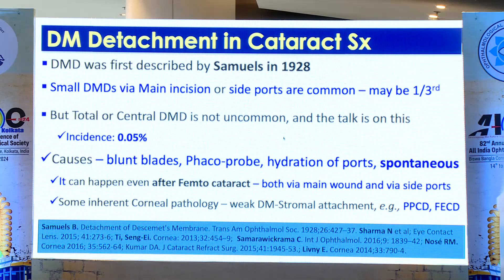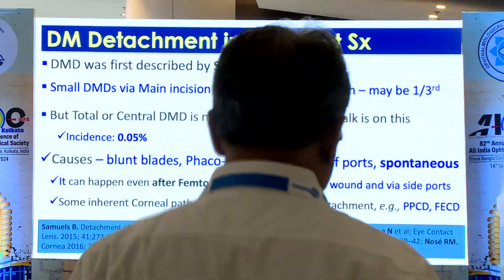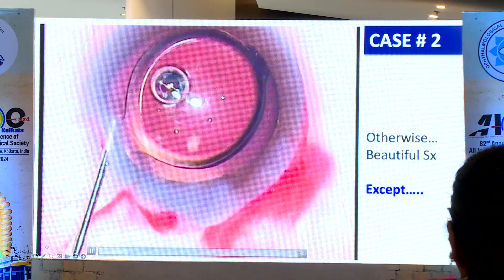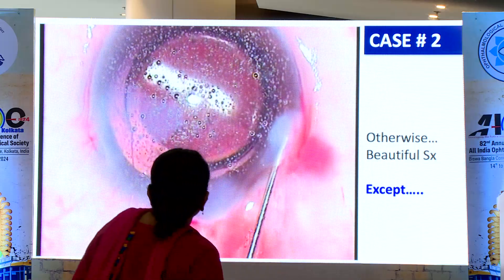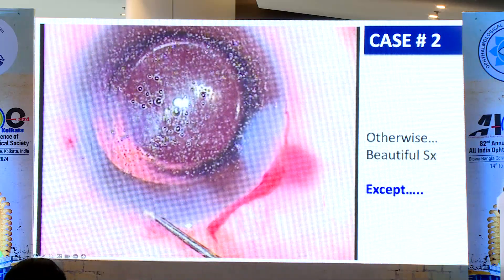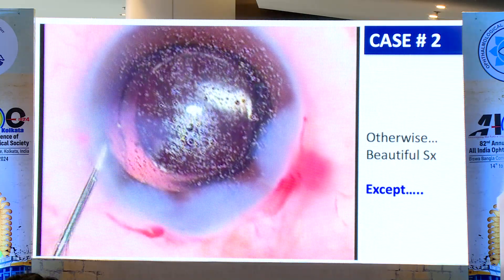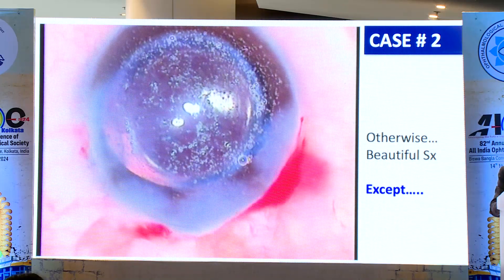Some cases become absolutely taut; if it is undulating it is easier and can settle with air alone. This condition was described in 1928 — it is not new. It can happen from a blunt blade, phaco probe, hydration, or spontaneously as in PPMD. Even after an uneventful phaco, after three days there can be a total detachment. In my own case, when I hydrated the second port there was a Descemet's detachment that I initially missed, and continued hydrating, which worsened it.